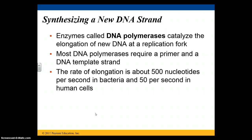Enzymes called DNA polymerases catalyze the elongation of DNA at a replication fork. Most of these polymerases require a primer and a DNA template strand. When DNA is copied, the rate of elongation is approximately 500 nucleotides per second in bacteria, and only 50 per second in human cells.